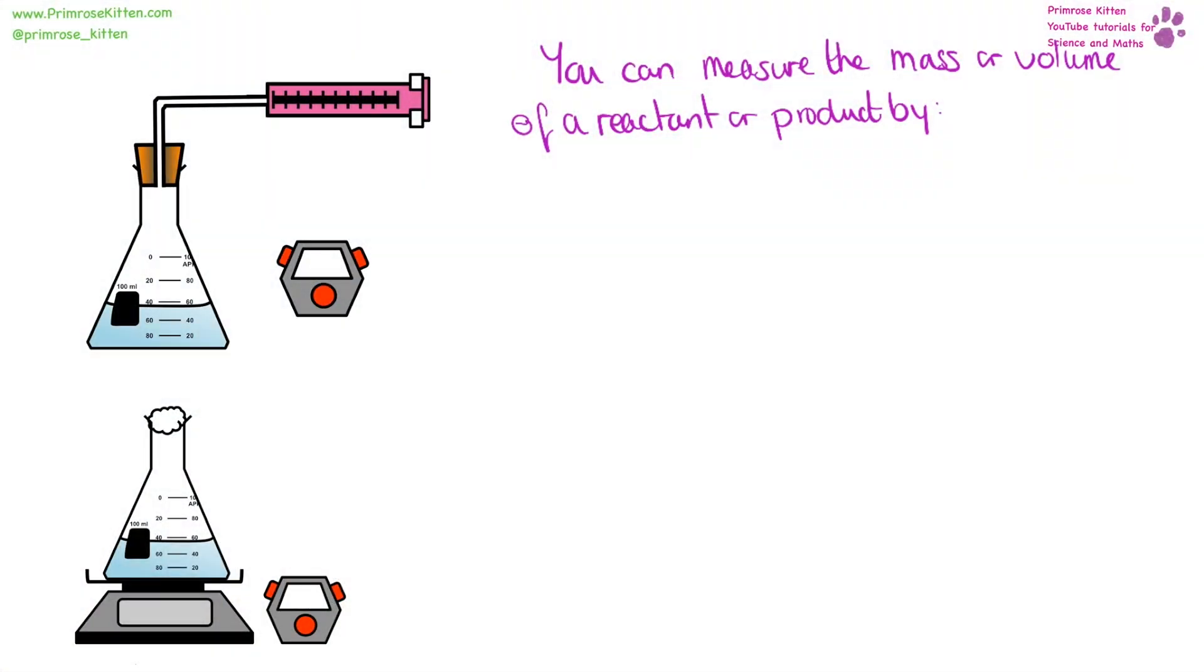You can measure the mass or volume of reactants in a product by collecting the product, say, in a gas syringe, or using a scale or balance to look at how the mass changes as a reaction progresses.